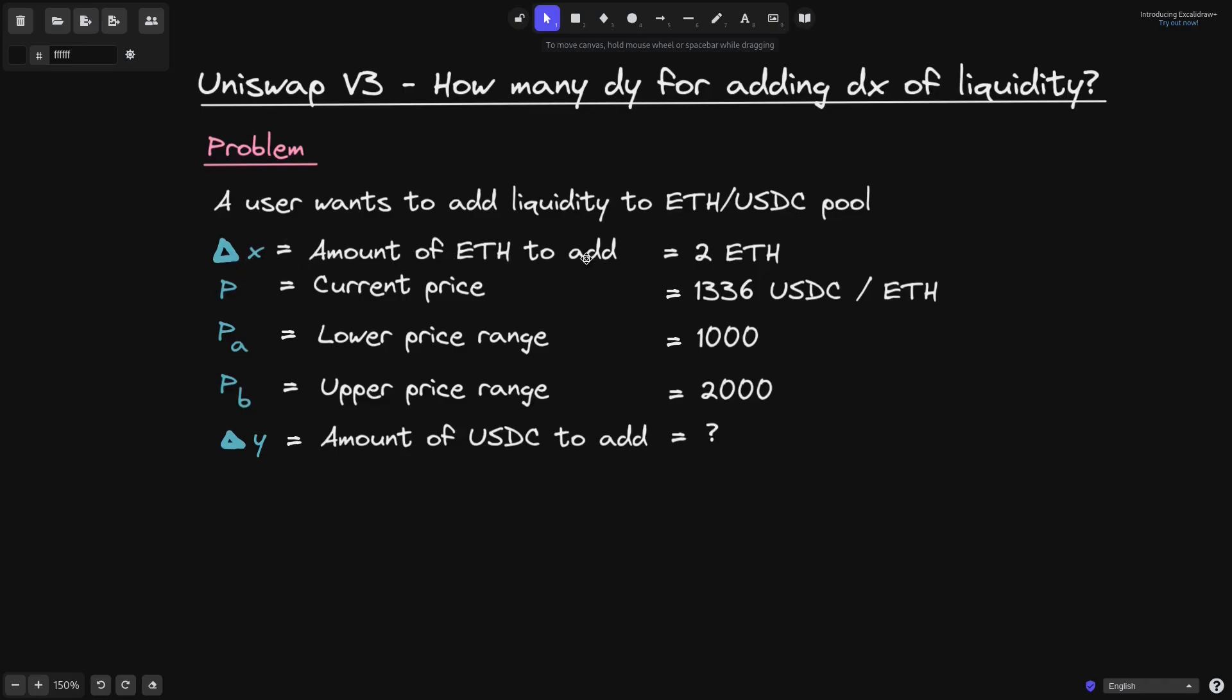For this example, we'll say that this user wants to add 2 ETH. P will be the current price. Let's say that the current price is 1,536 USDC per ETH. P_A is the lower price range, we'll say that this is 1,000, and P_B is the upper price range, we'll say that this is 2,000.